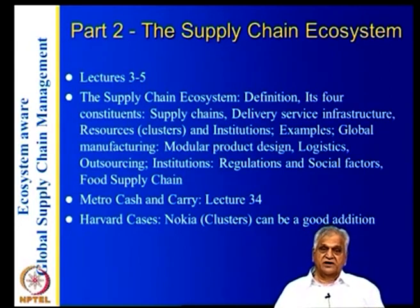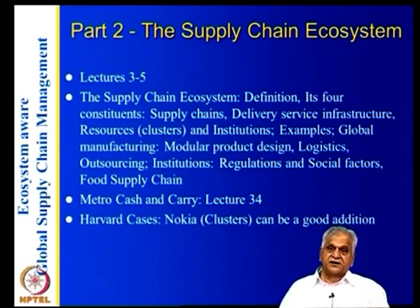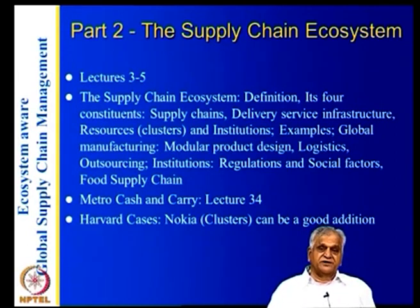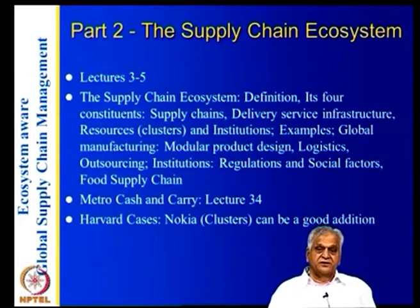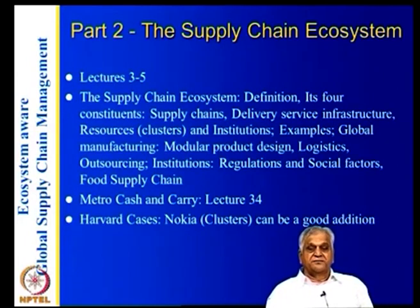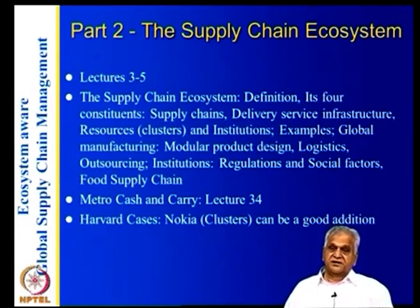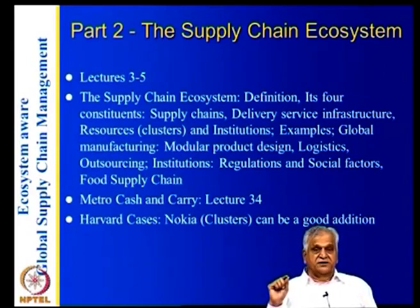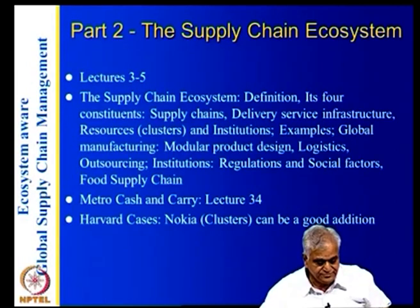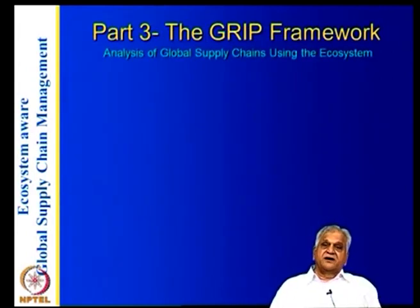Both cases show the positive and negative aspects of institutions. You can look at food supply chains, auto supply chains, and so on. One exercise suggested in this course: if you are working for a company or doing a PhD, map the ecosystem for your organization — map the supply chain or value chain, and break it into various goals and modules.